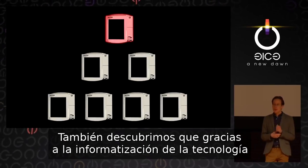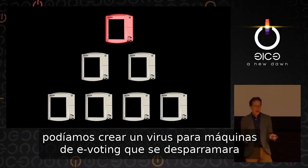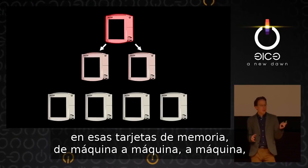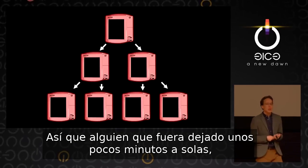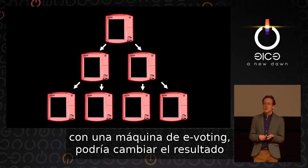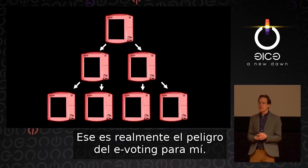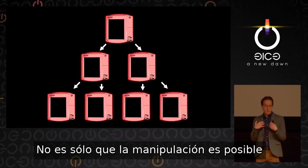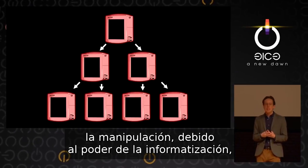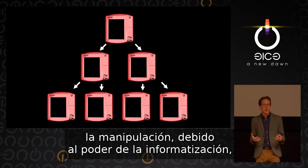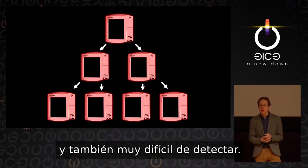We also discovered that we could create a voting machine virus that would spread on those memory cards from machine to machine in the course of a normal election cycle, so that someone who had just a few minutes alone with one voting machine could change the election outcome in an entire state. The real danger of e-voting is not just that tampering is possible — it's that tampering, because of the power of computerization, can be much more wide-scale with a very small conspiracy and also very hard to detect.